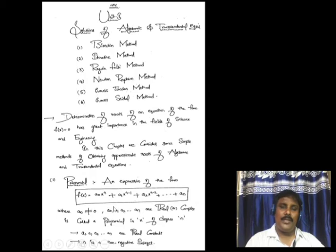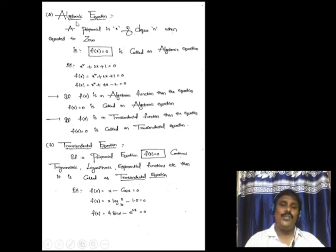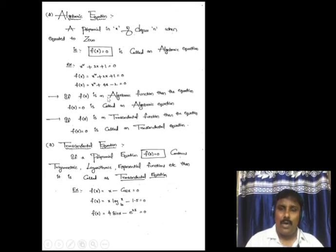Next, the definition of an algebraic equation. A polynomial in x of degree n, when equated to 0 — that means f(x) = 0 — is called an algebraic equation. For example, x² + 2x + 1 = 0 is an algebraic equation. If f(x) is an algebraic function, then f(x) = 0 is called an algebraic equation.